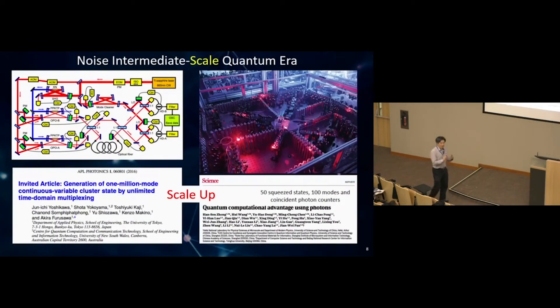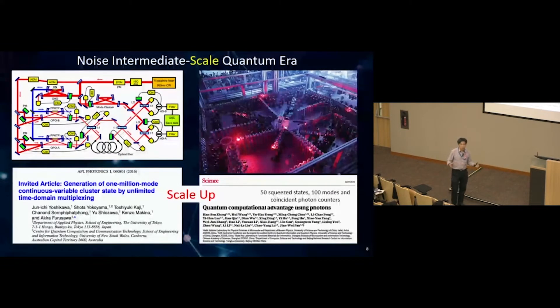In my area of optics, we have the same thing. Akira Furusawa from Tokyo University announced he can make a 1 million mode continuous variable cluster state, and Jianwei Pan's group demonstrated quantum advantage using 50 squeeze light sources with 100 modes and detectors. Perhaps now we're switching from confluence to scale up. When you scale up, would it still work and how well?